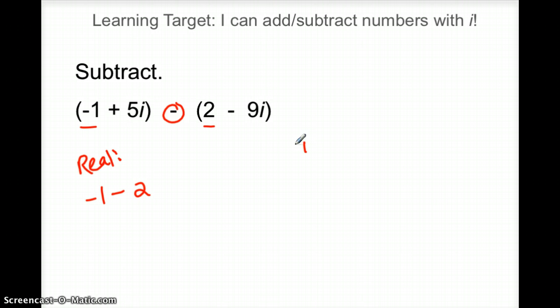And then over here with the imaginary stuff, the stuff with the i, 5i minus, oh, there's that negative 9i again. So you're subtracting negative. It's important that you have both of those signs so you don't drop a sign and get messed up.